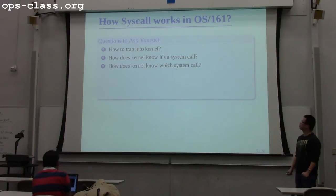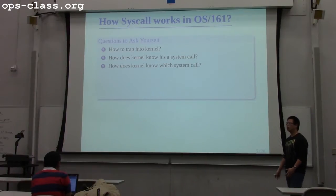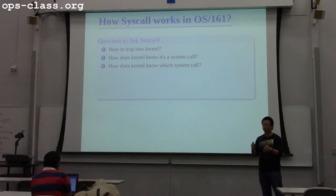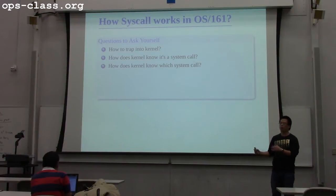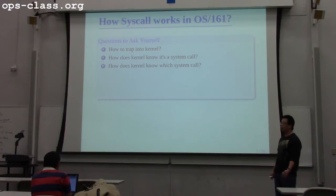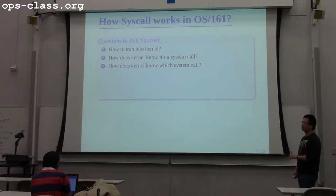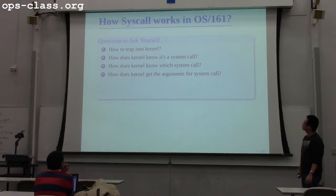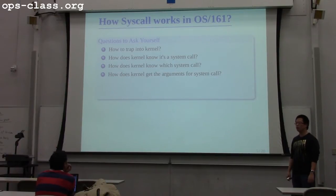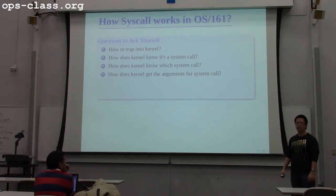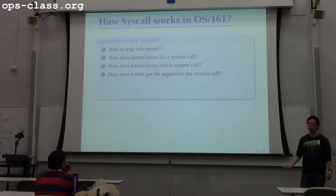How does the kernel know which syscall? Suppose the kernel already knows it's a syscall — but we have all kinds of syscalls; which one does the user want to perform? And how does the kernel get the arguments for a syscall? The kernel has to figure out the user wants to open a file — but where is the filename? Where is the flag? How does the kernel get all that?